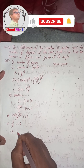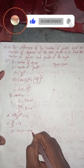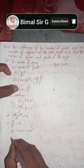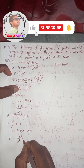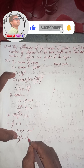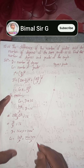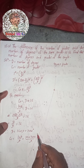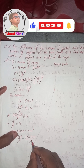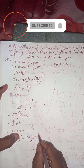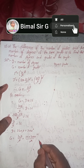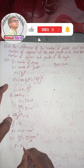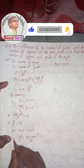Therefore D is equal to 16 into 9, which is 144. Now we will find G. G is equal to 10D by 9. D is equal to 144, so G is equal to 10 into 144 divided by 9. Since 144 is 16 into 9, we cancel the 9, giving G equal to 16 into 10, which is 160. So G is equal to 160 grades.